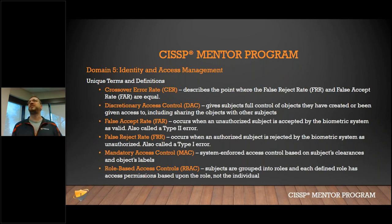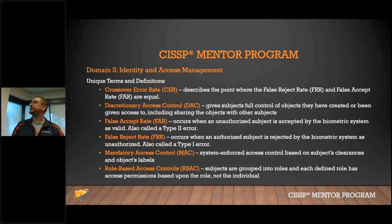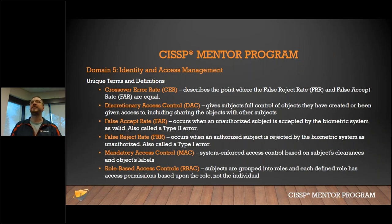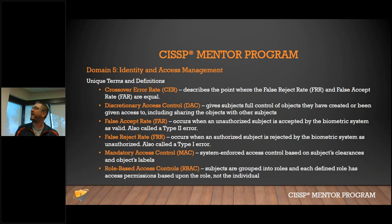Discretionary access control gives owners full control of objects they've created or been given access to, such as a Windows file share where the owner can share it and assign permissions. False accept rate — an unauthorized subject is accepted by a biometric system — is a Type 2 error. False reject is a Type 1 error. Know the difference between those two.